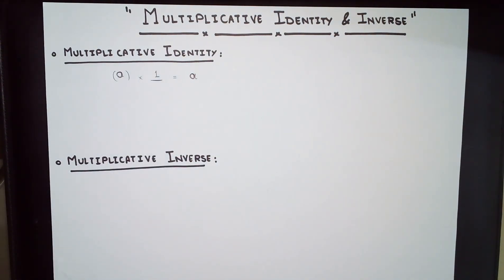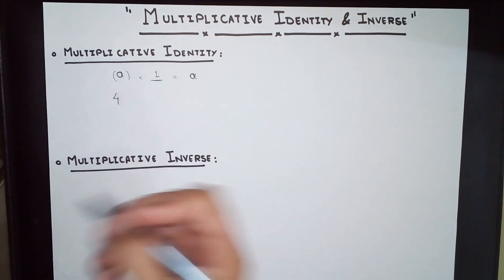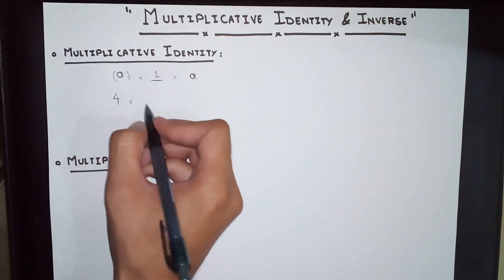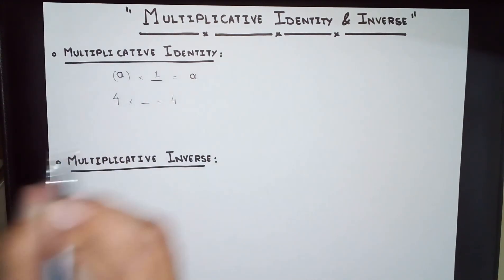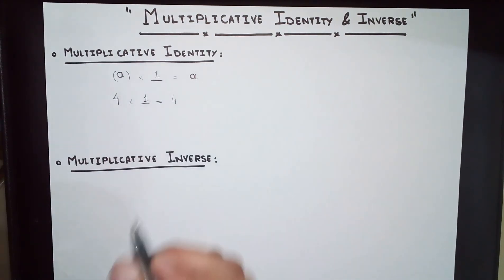Let us do a problem. We have four. Multiply four with a number to get four again. Yes, it is one. One is the multiplicative identity. And that is it.